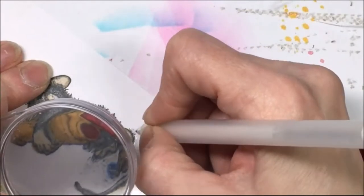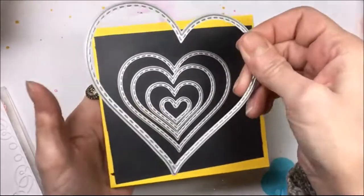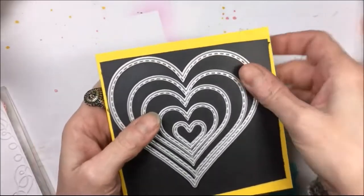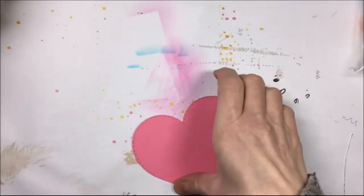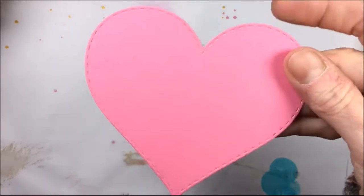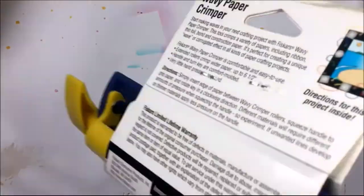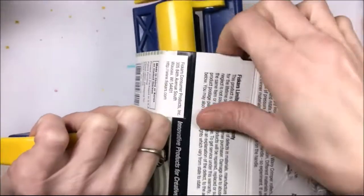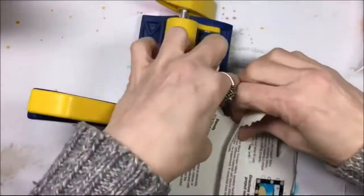I have some heart dies here, they're stitched hearts. I can't remember where I got them. I cut out a pink heart and then I'm going to run it through this paper crimper. It's the one I just showed on a haul that I got at Goodwill.